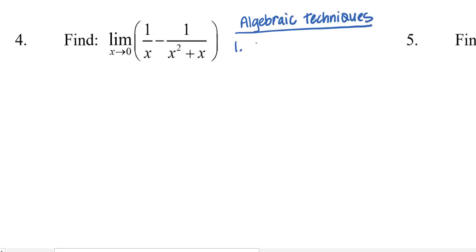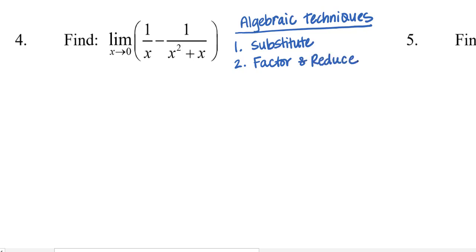First and foremost, if you are able to just substitute in that value and evaluate the limit, that's the best path. So substitution is our main goal for every problem. Number two is factor and reduce — you can call it simplify or rewrite, because sometimes it's not always the most reduced form that we need. The whole purpose for factoring and simplifying is so that you can then substitute in the value you want.